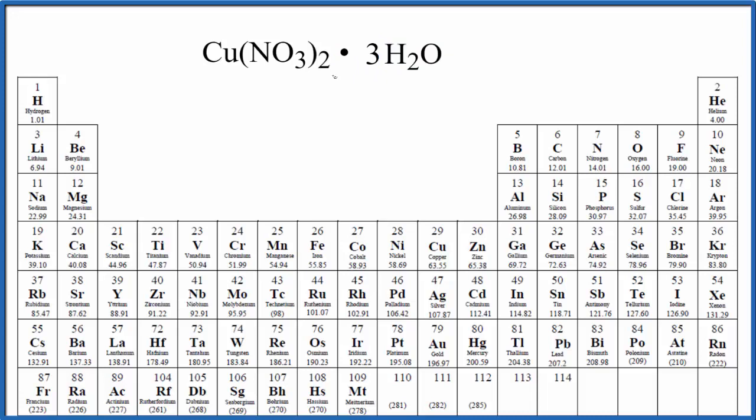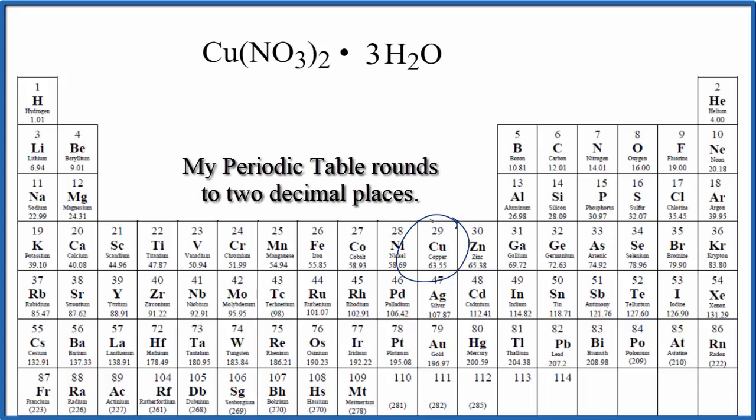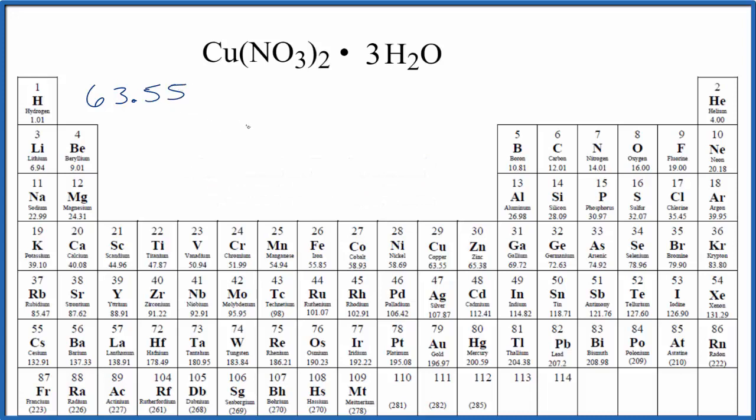To find the molar mass, we're going to find the molar mass of the copper 2 nitrate and then the three water molecules and add all that together. For copper 2 nitrate, we go to the periodic table, copper right here, 63.55 and the units are grams per mole. I'm not going to write the units right now, we'll write those at the end.